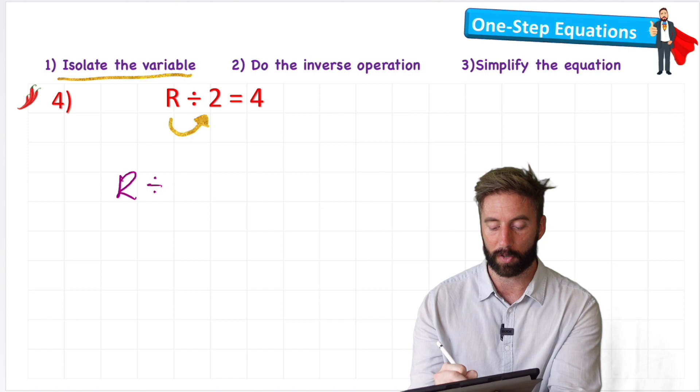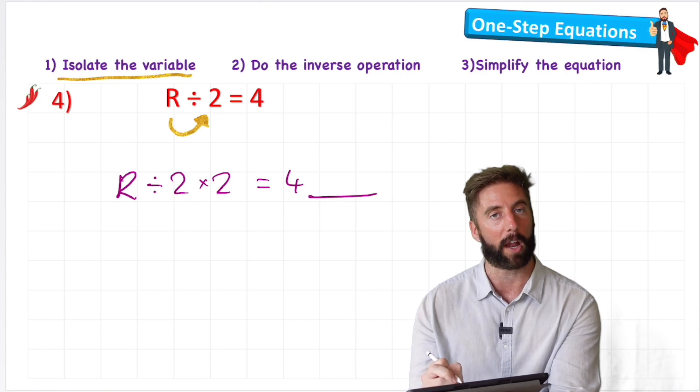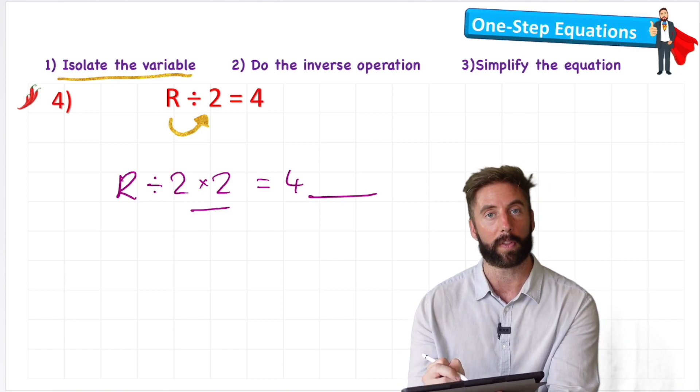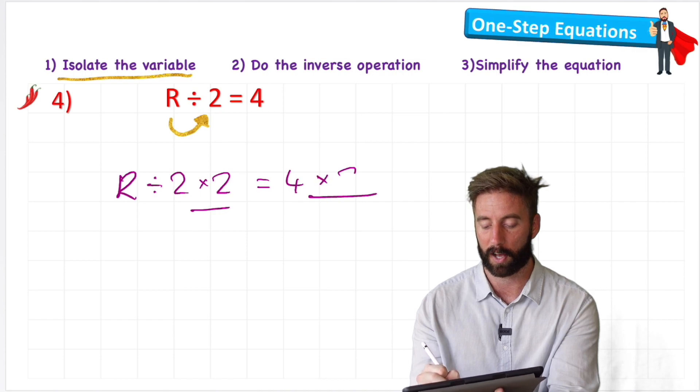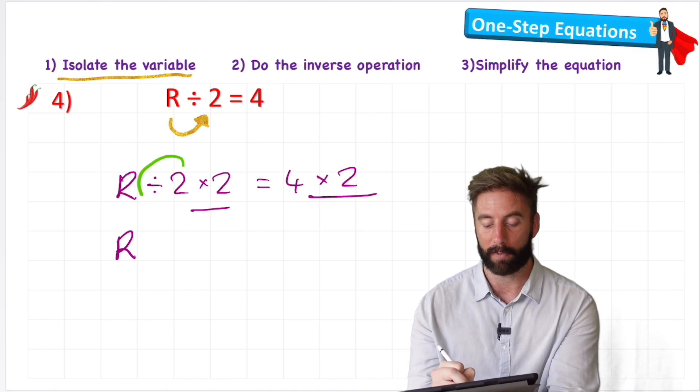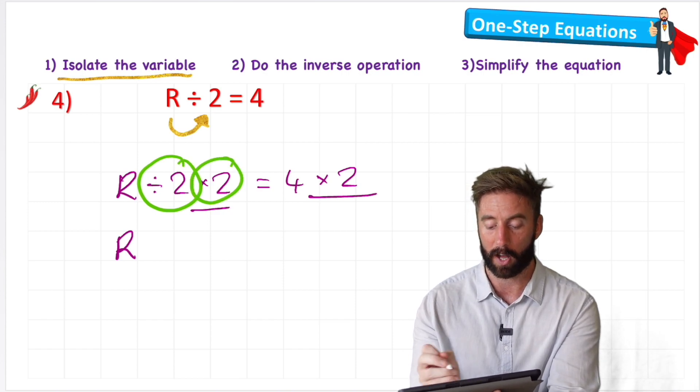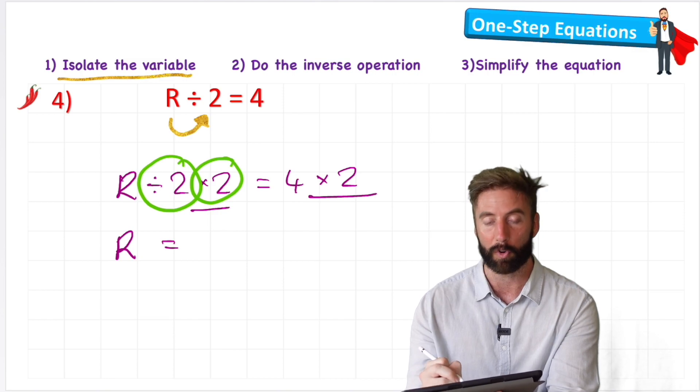r divided by 2 times 2 equals 4. But I can't just leave my 4 like that, can I? Because I've added a times 2 on this side. So I must add my times 2 on this side. Now let's do my next line of the equation, r. And now my divide 2 is cancelled out by my times 2. So I can just keep it as r. r equals 4 times 2.